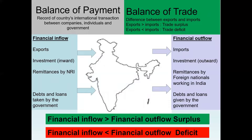Balance of payment is a much wider term and is a record of a country's international transactions between companies, individuals, and government. For every country, there are various transactions which involve inflow and outflow of finance. Some common examples of inflow are exports, investment coming into a country, remittances by nationals staying abroad, loans taken by the government, etc.